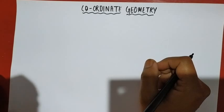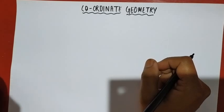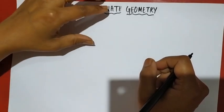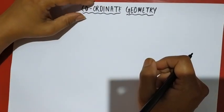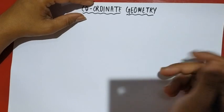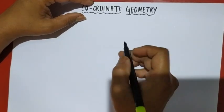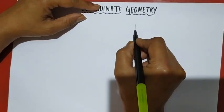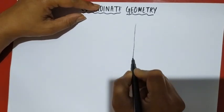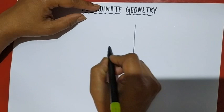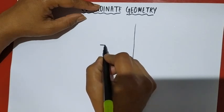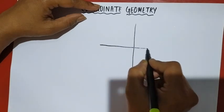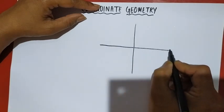We are going to show the Cartesian plane. The Cartesian plane shows the X axis and the Y axis, showing the horizontal plane.